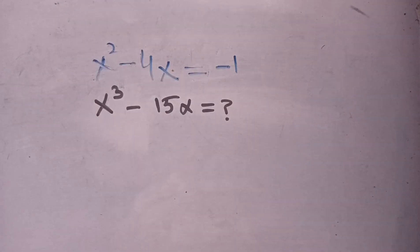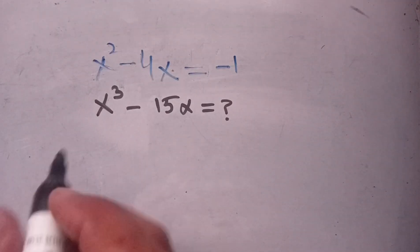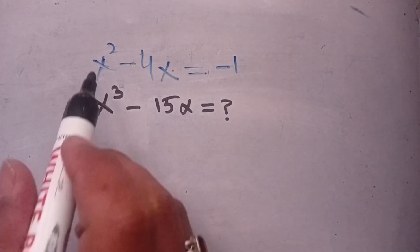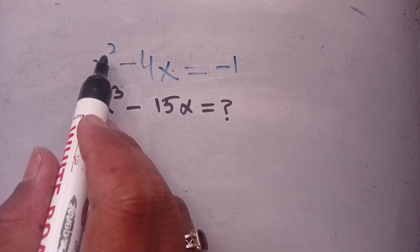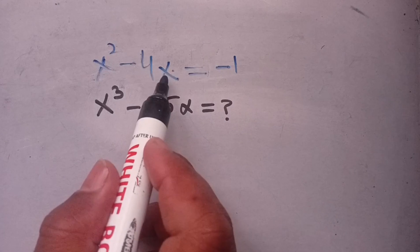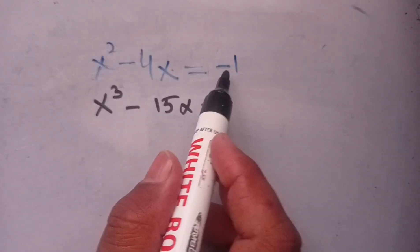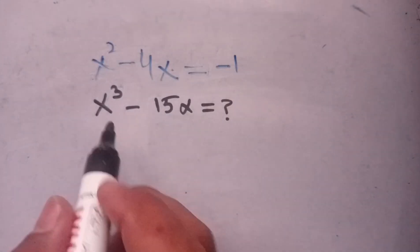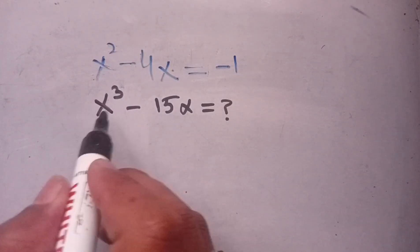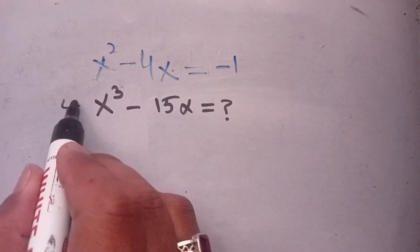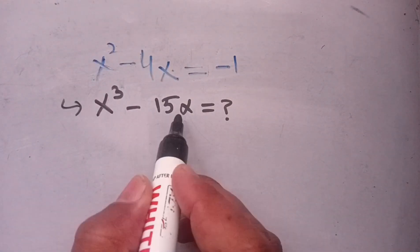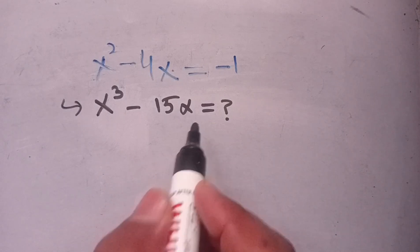Hello everyone. In today's video we are going to solve this problem: if x squared minus 4x is equal to minus 1, we have to find the value of x cubed minus 15x.